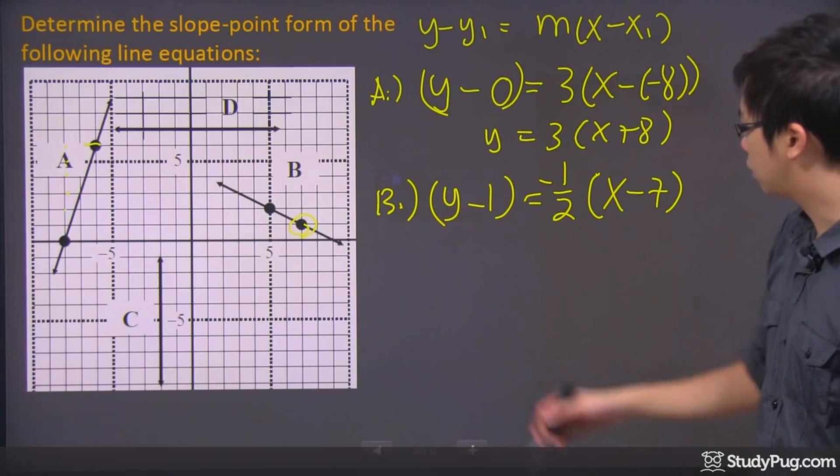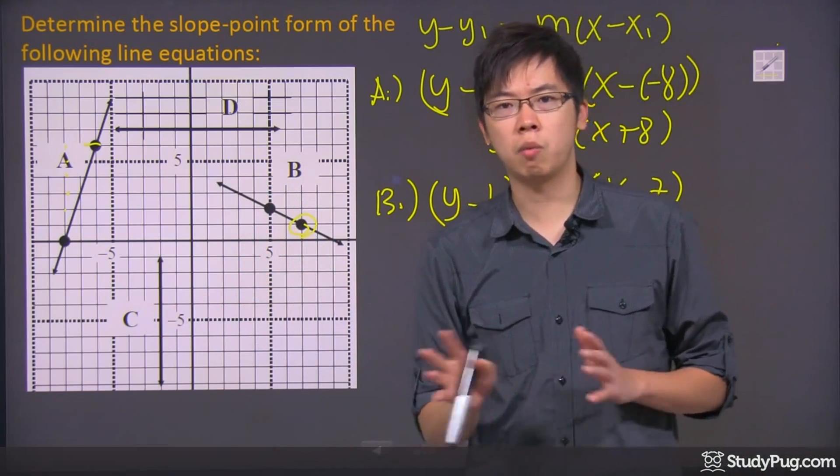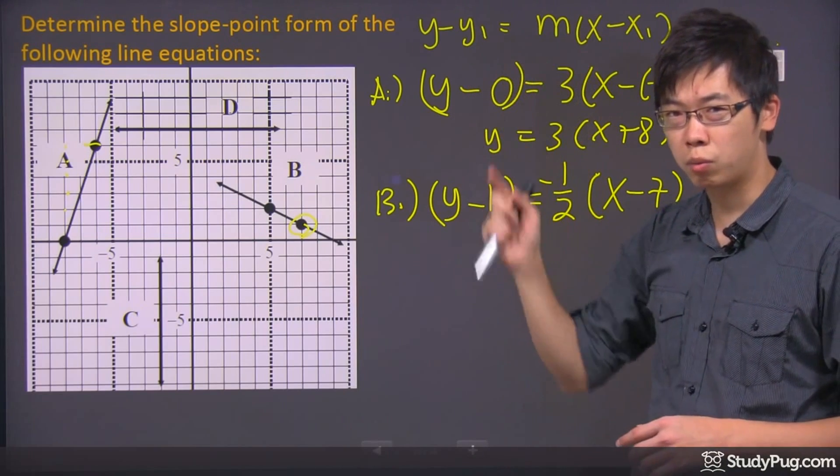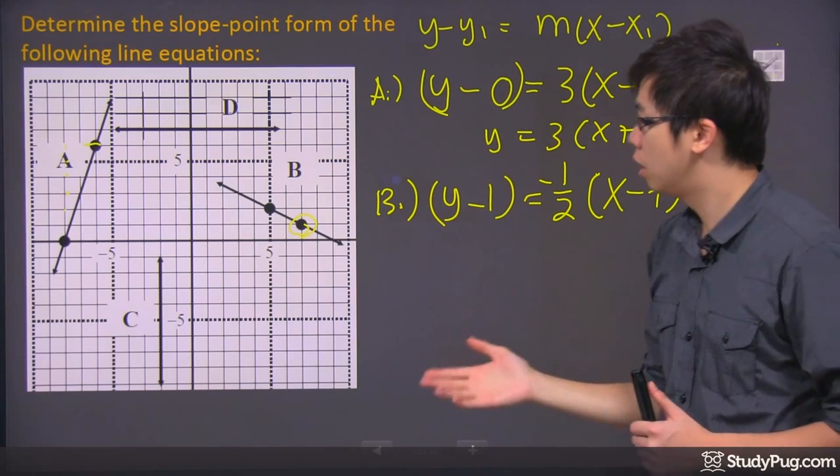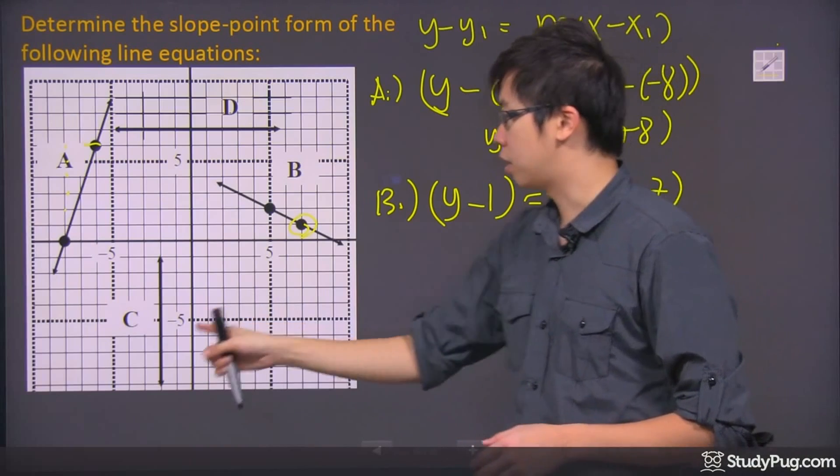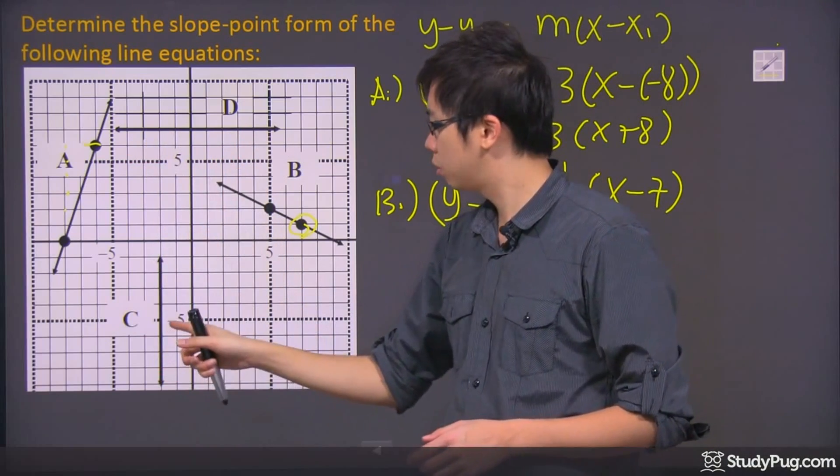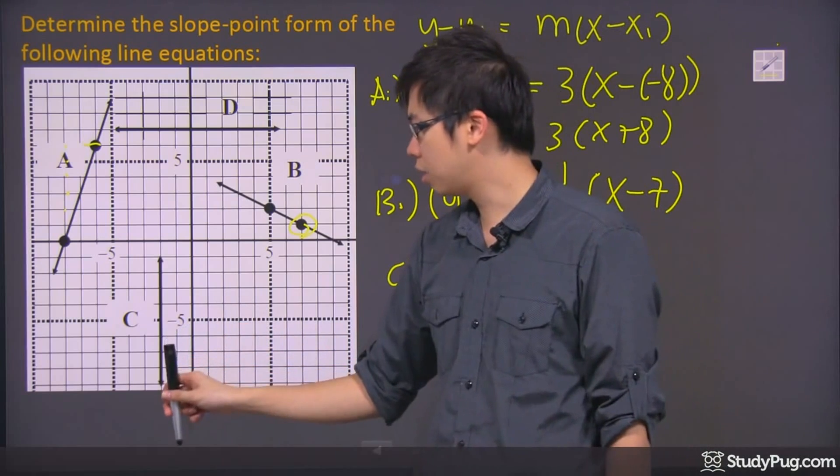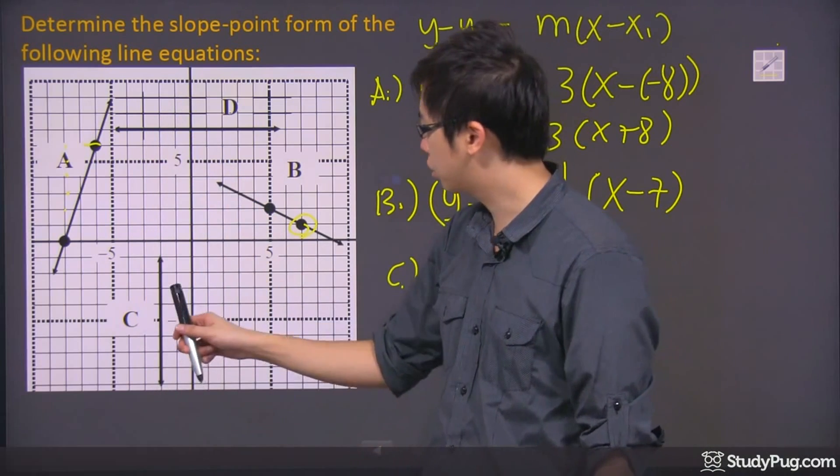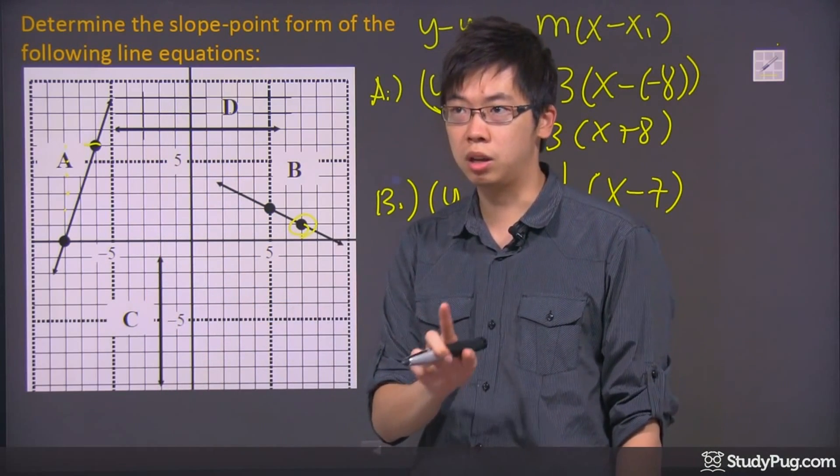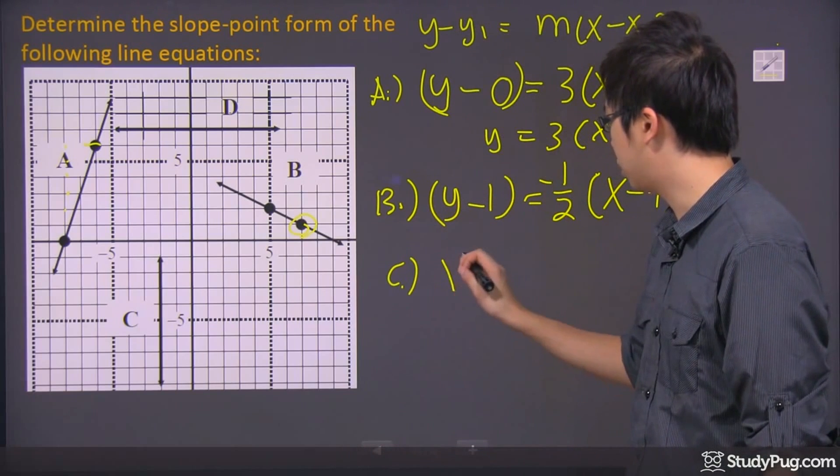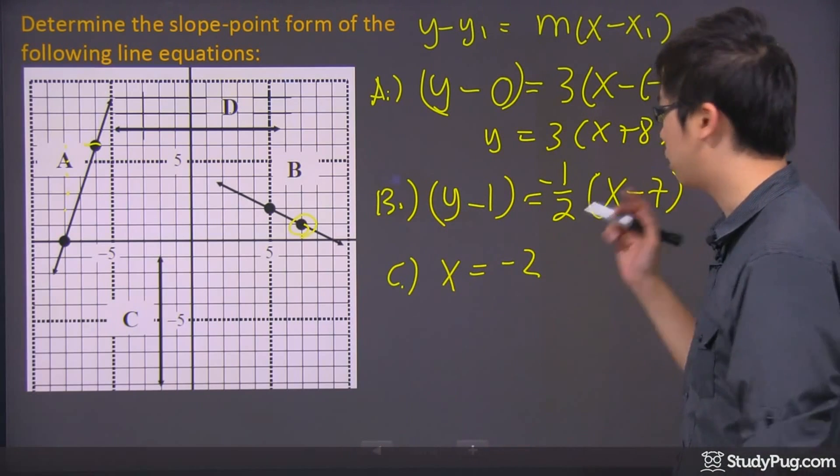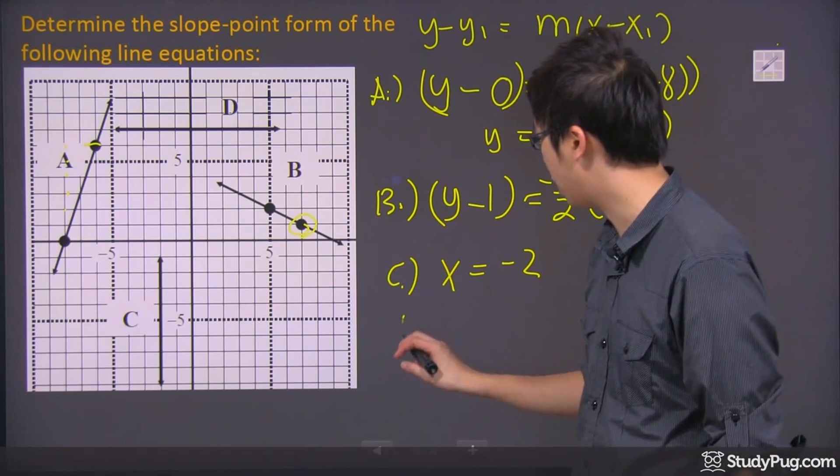Now what's my next one which is C. Now for C and D, I would not recommend that you actually do the slope point form right away because it's missing a lot of stuff. So if you're looking at C and D, let's do C first. If I'm looking at C right now, it's just a vertical line going straight up. So it's going across the x when x equals negative 2. So it's just x equals negative 2 and that's it, because everything else is going to disappear. You don't have to write them down anyway.